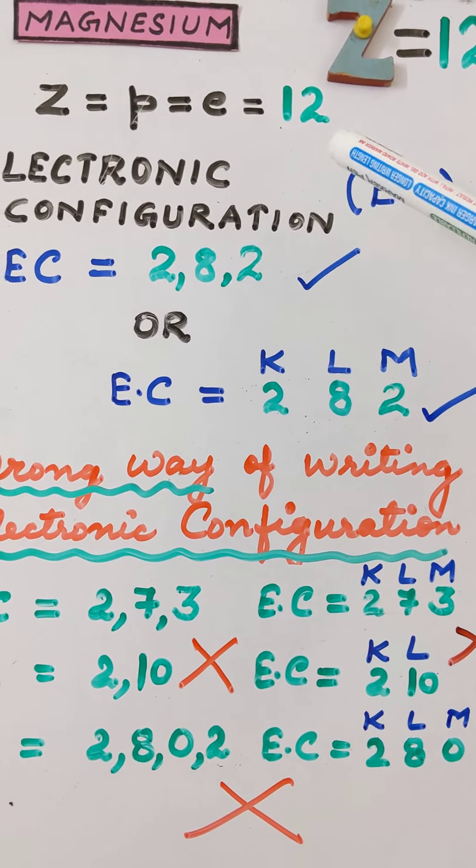Or if we try the arrangement where we put 2 electrons in the K shell — so the K shell is complete — but we put 10 electrons in the L shell, this is just not a possible case. We cannot have more than 8 electrons in the L shell. Therefore the electronic configuration of the form 2, 10 is also going to be incorrect.